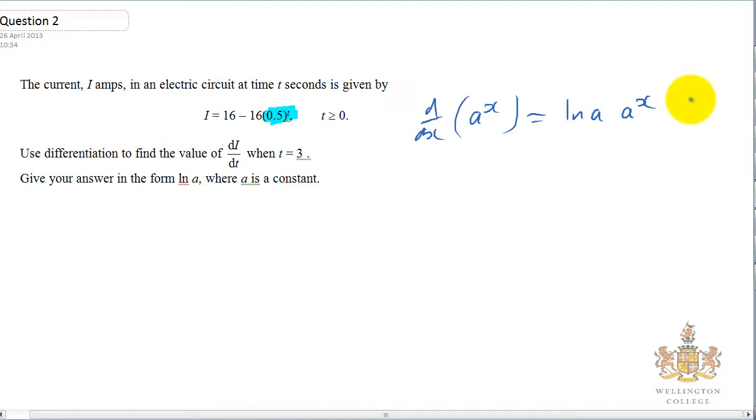Now if you're stuck in the exam and you can't remember, you can use implicit differentiation to help you. If you had y equals a to the x, take logs of both sides, you get natural log of y equals natural log of a to the x, and then we get natural log of y equals x natural log of a.